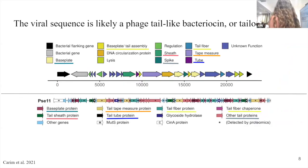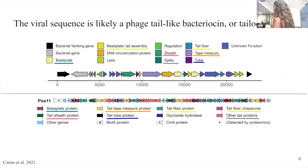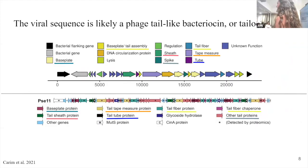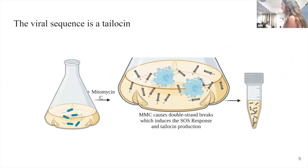Then we came across a paper describing something called a phage tail-like bacteriocin, or talosin. This is the gene plot from the paper, with my gene plot on top, and you can see the orthologous genes underlined. It's essentially made up of the same genetic makeup. So we concluded we probably have this thing called a talosin, which I'd never heard of before — and now it's becoming my PhD project.